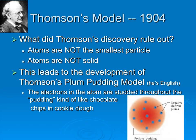Thompson's model is the plum pudding model — he's English. We might call it the chocolate chip cookie model nowadays. He said there was pudding — that was the atom itself, the red in the picture — and the electrons were studded throughout the positive pudding, like the plums in plum pudding, or like chocolate chips in chocolate chip cookie dough. He's taking new data and new information and not throwing out the idea that atoms exist — just adjusting it to fit new evidence.